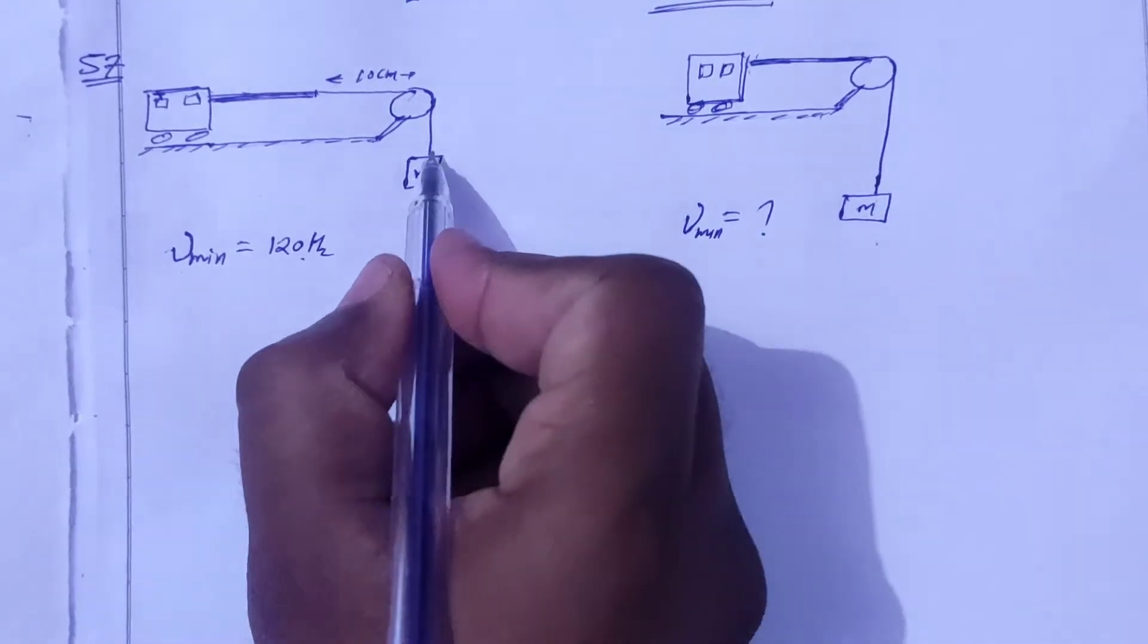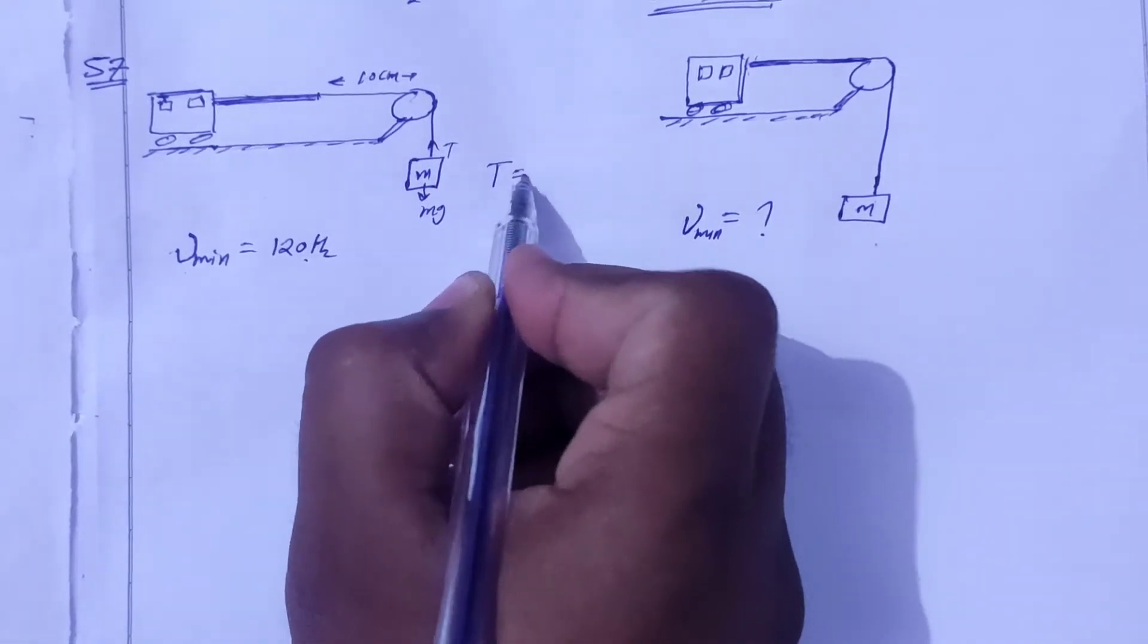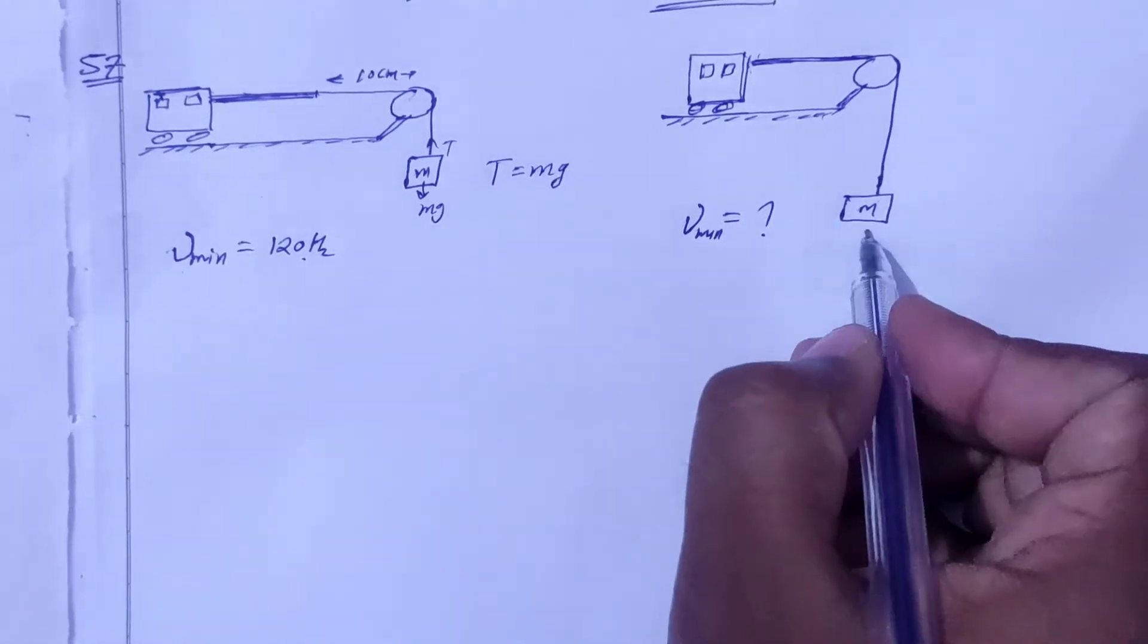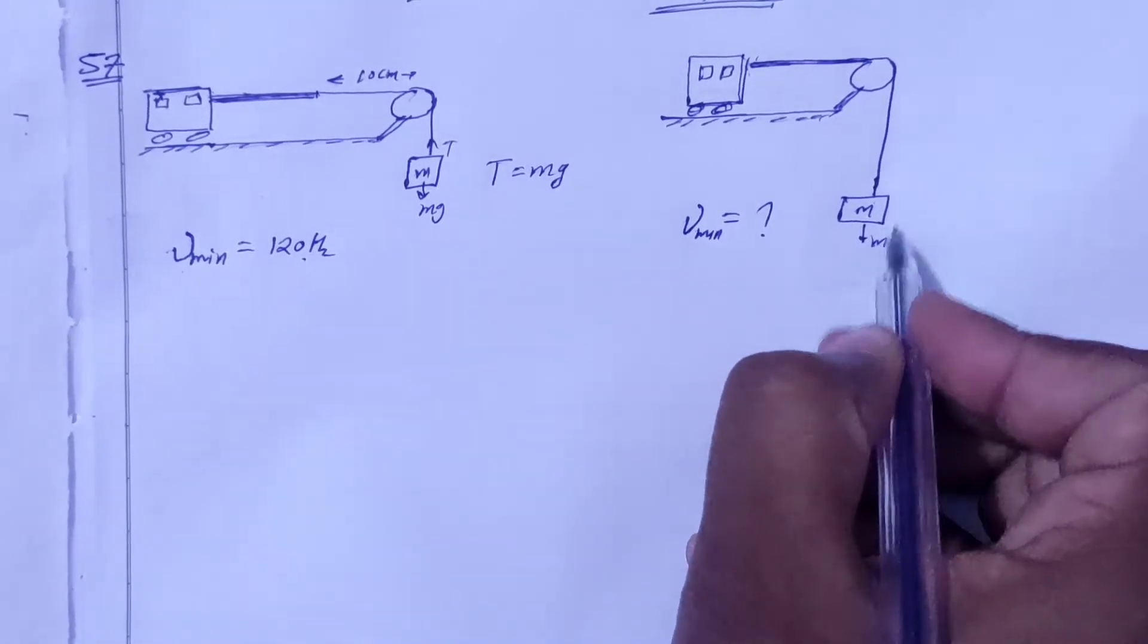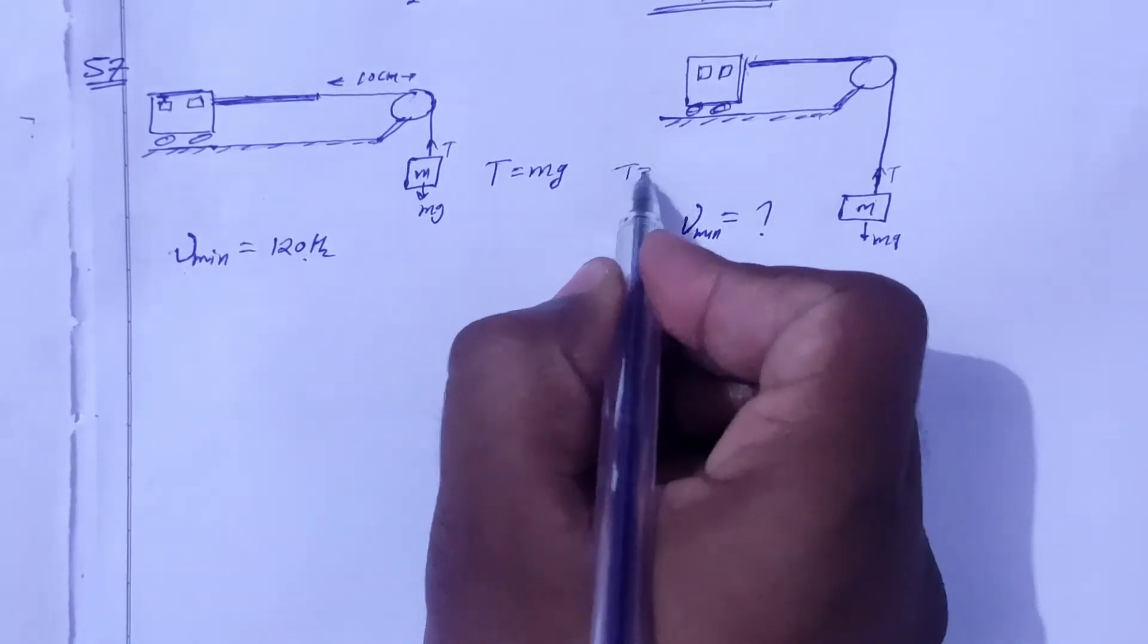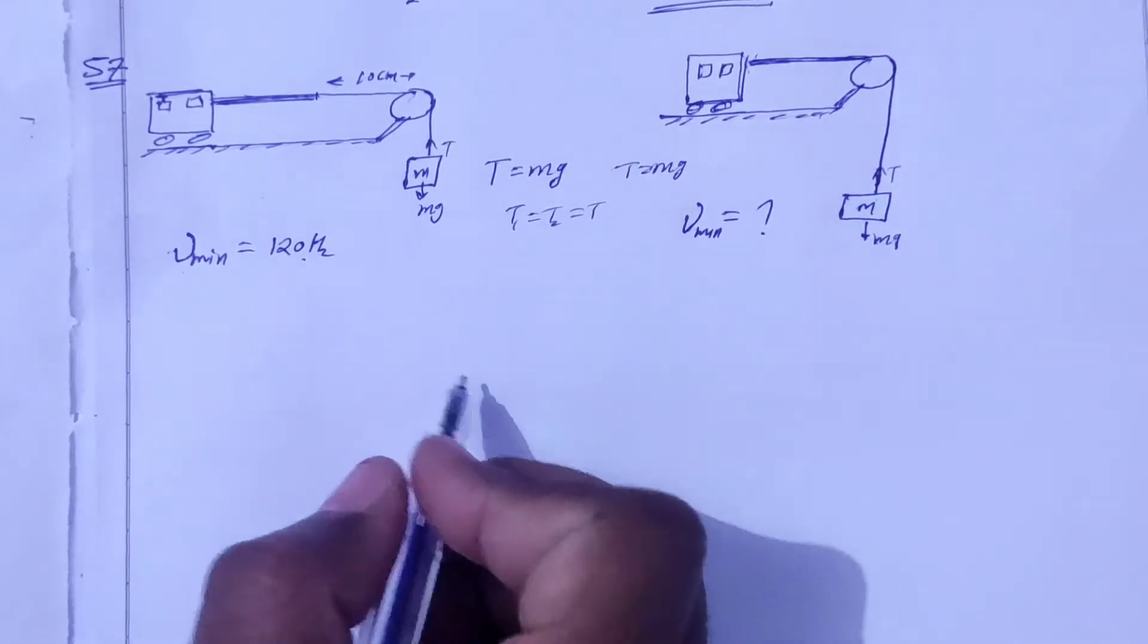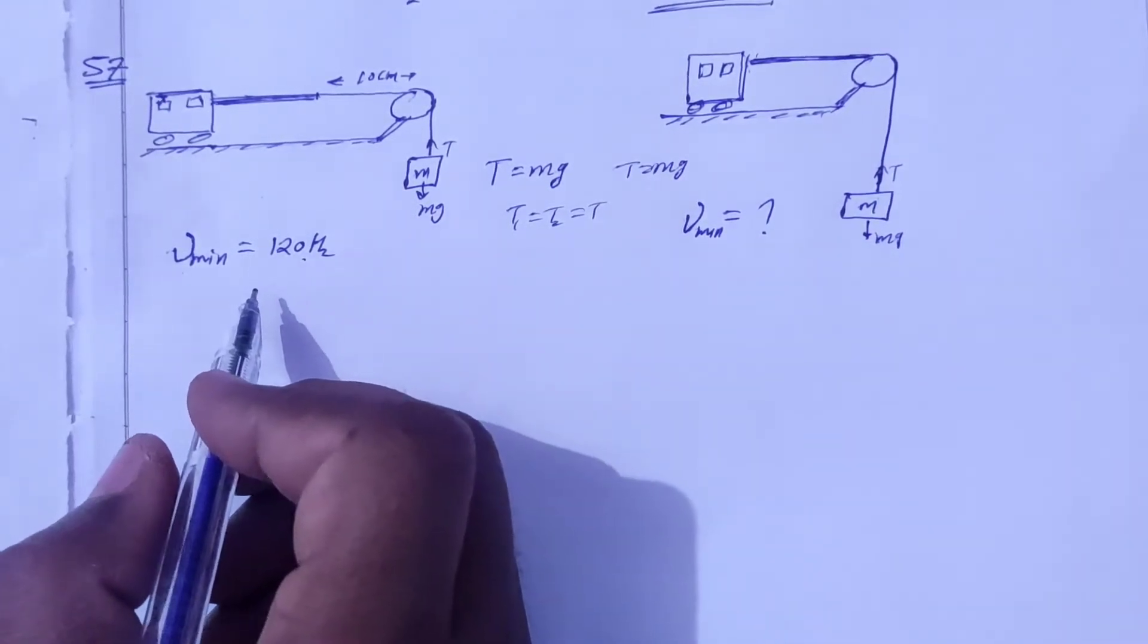First, let's see the tension here, which is mg. So here the T is equal to mg. If you see here the T is equal to mg, and if you see here the T is equal to mg. The tension remains the same in both cases.